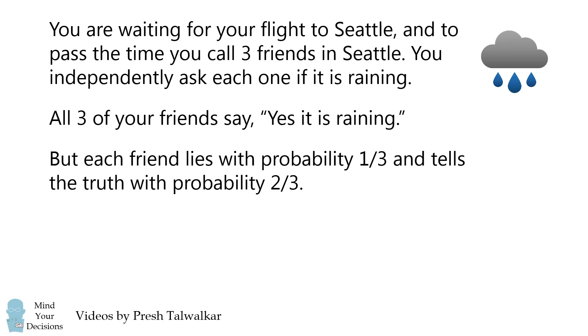But each friend lies with probability 1/3 and tells the truth with probability 2/3. Can you solve for the probability it is actually raining in Seattle?